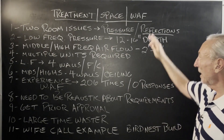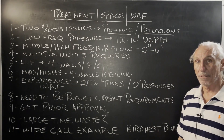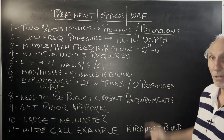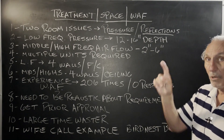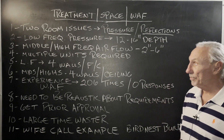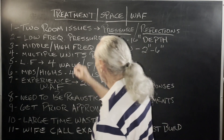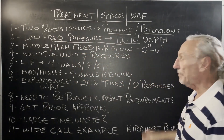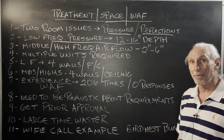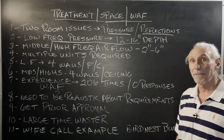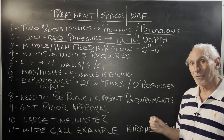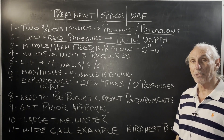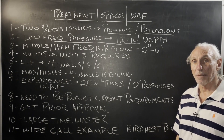Everything else falls under those two headings. Low frequency pressure problems take 12 to 16 inches of depth to fix. So if it's a freestanding panel, you're going to lose that much space on the wall that it's up against.